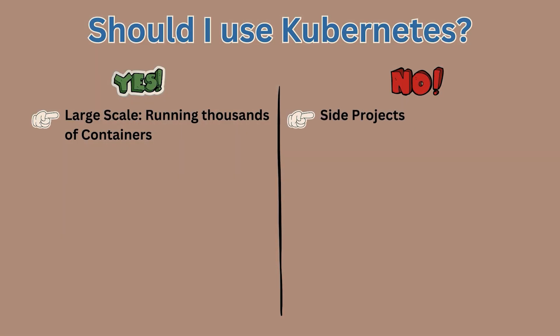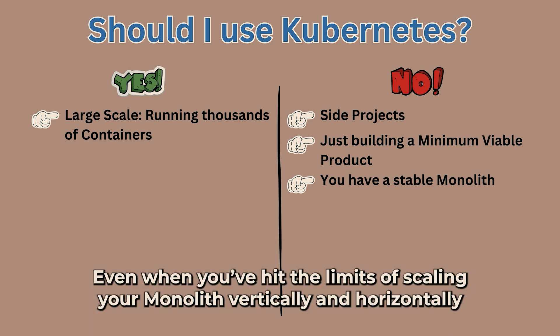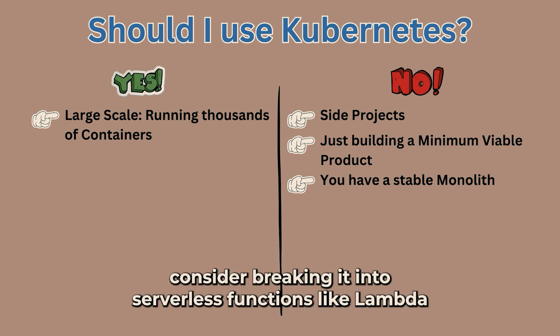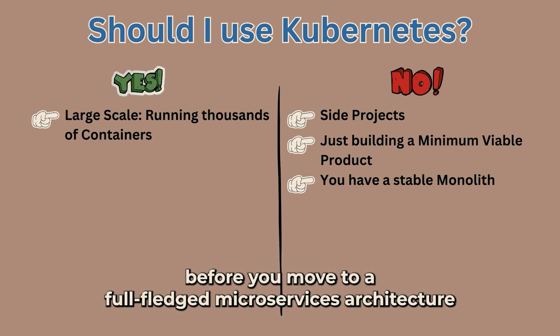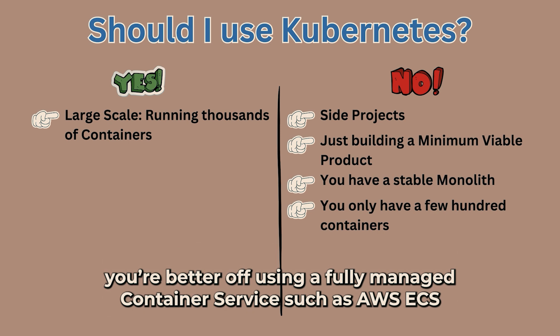But if you're just doing a side project or are an early-stage startup focused on shipping your product to a few customers, you don't have the scale for Kubernetes — don't waste your time on it. If your entire web app is powered by one monolithic backend and everything is stable, Kubernetes is overkill. Even when you've hit the limits of scaling your monolith vertically and horizontally, consider breaking it into serverless functions like Lambda before moving to a full microservices architecture. If your microservices are running fine with just 400 to 500 containers, you're better off using a fully managed container service like AWS ECS. But if you're truly beyond that scale, then you need a better container management strategy and Kubernetes is probably a great tool for you.